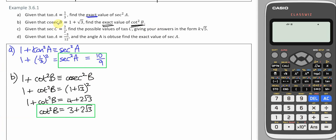In part B, if we did try and find the angle B, so we've got cosec B is 1 plus root 3. So that means sine B is 1 over 1 plus root 3.